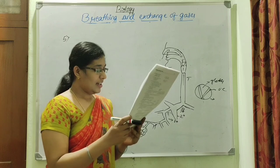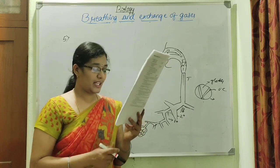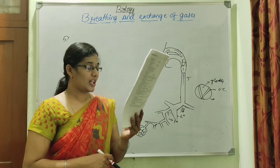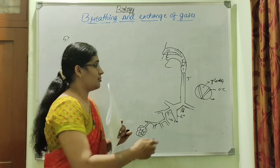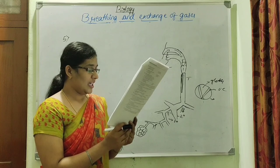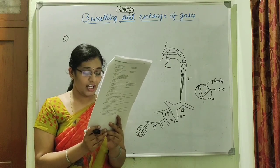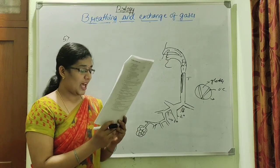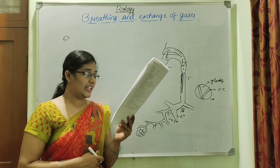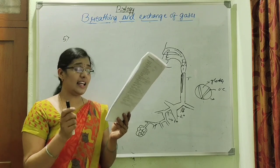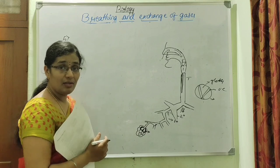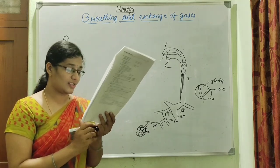Next questions: The lining of the trachea is made of pseudo-stratified epithelium — Option C. Each terminal bronchiole gives rise to very thin, irregular, highly vascularized bag-like structures called alveoli — Option A. Alveoli are thin-walled, irregularly vascularized structures where actual gaseous exchange takes place.